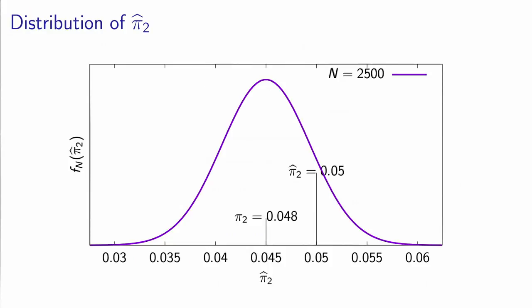For example, the distribution of pi hat 2 can be seen as this curve. In this example, I assume that the true value of pi 2 is equal to 0.048. But from the sample that we have collected, we have estimated that the value of the parameter is 0.05. It's different from the true value. And if I had drawn another sample, I would have found another value, and all these values would follow this distribution.